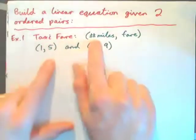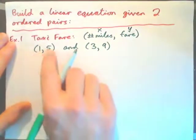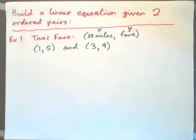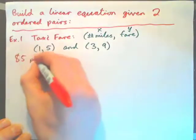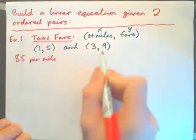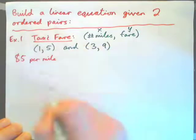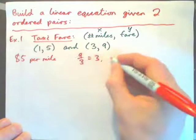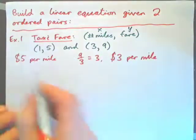If a taxi fare has the number of miles as the input x and the fare as the output y, and you go one mile for $5 and three miles for $9, what's the taxi fare? When we see this, we immediately think five dollars to go one mile means the fare must be five dollars per mile. But in the same taxi, three miles for nine dollars gives nine over three, which is three dollars per mile.